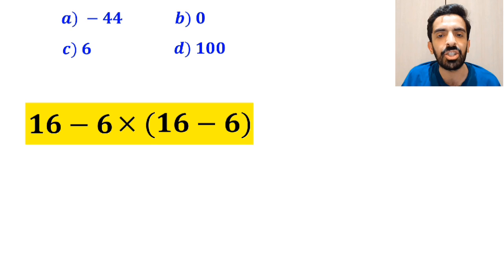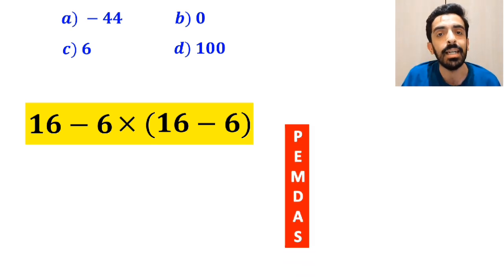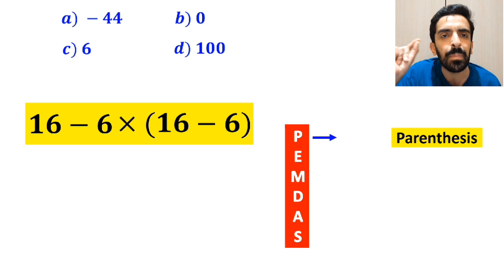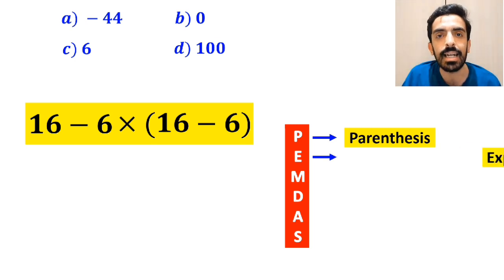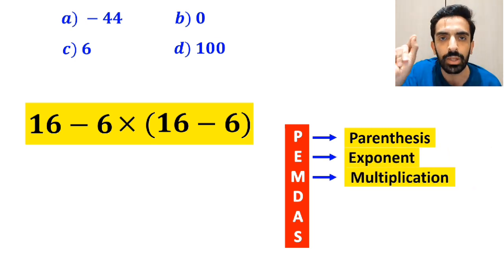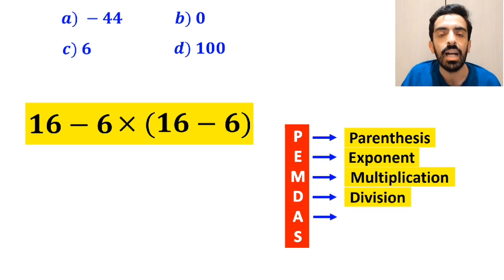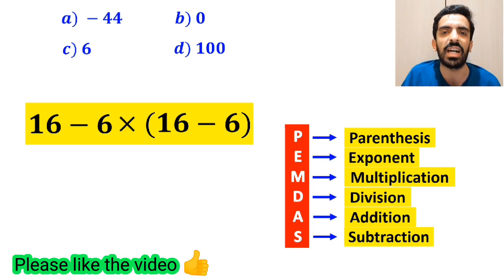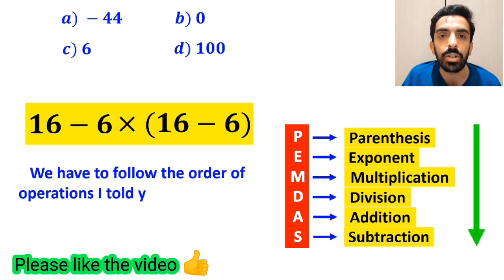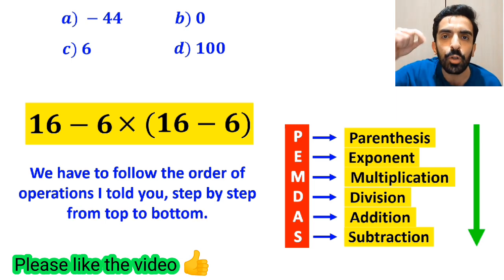To solve this question, we need to follow a rule that is called PEMDAS. P stands for parentheses, E stands for exponent, M stands for multiplication, D stands for division, A stands for addition, and S stands for subtraction. We have to follow the order of operations step by step from top to bottom.